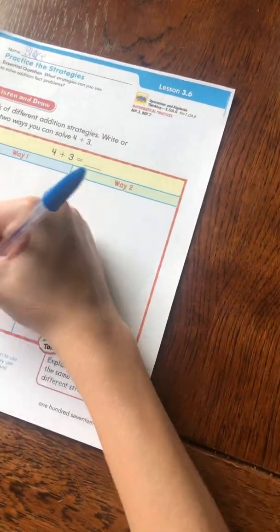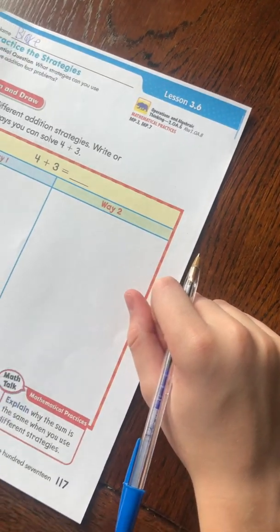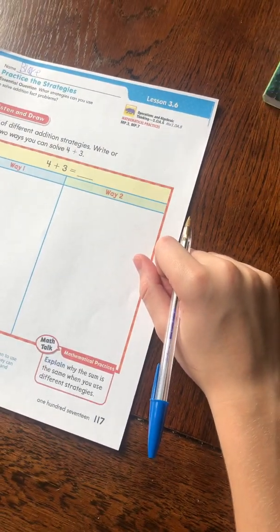Okay, how could we do doubles minus 1? Hmm. We could do 4 plus 4. Okay, let's do that.